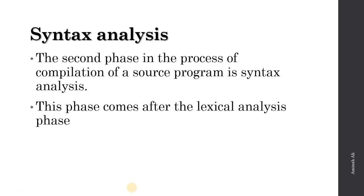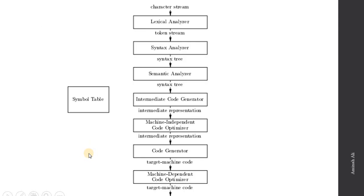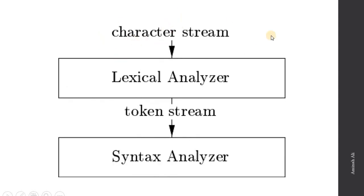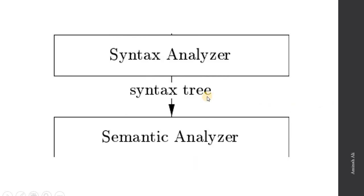In compiler construction, first we have lexical analysis and then we have syntax analysis. This picture shows the phases of the compiler — our first phase is the lexical analyzer and the second phase is the syntax analyzer. The lexical analyzer takes character streams as input and produces a token stream, which is given to the syntax analyzer. The syntax analyzer analyzes the syntax of our language and creates a syntax tree, which is then given to the semantic analyzer.